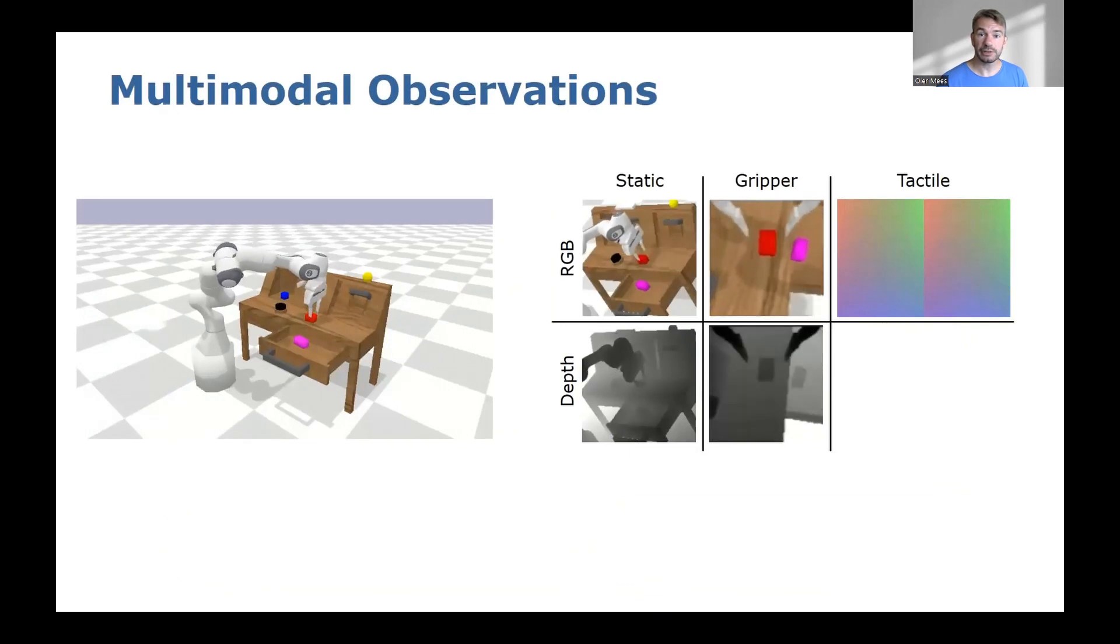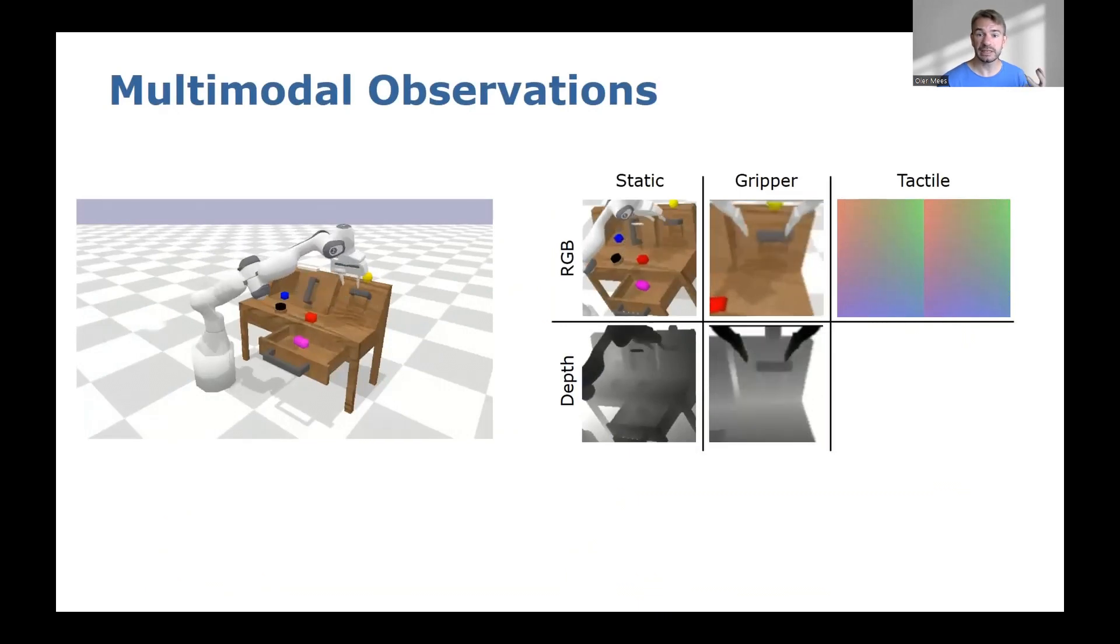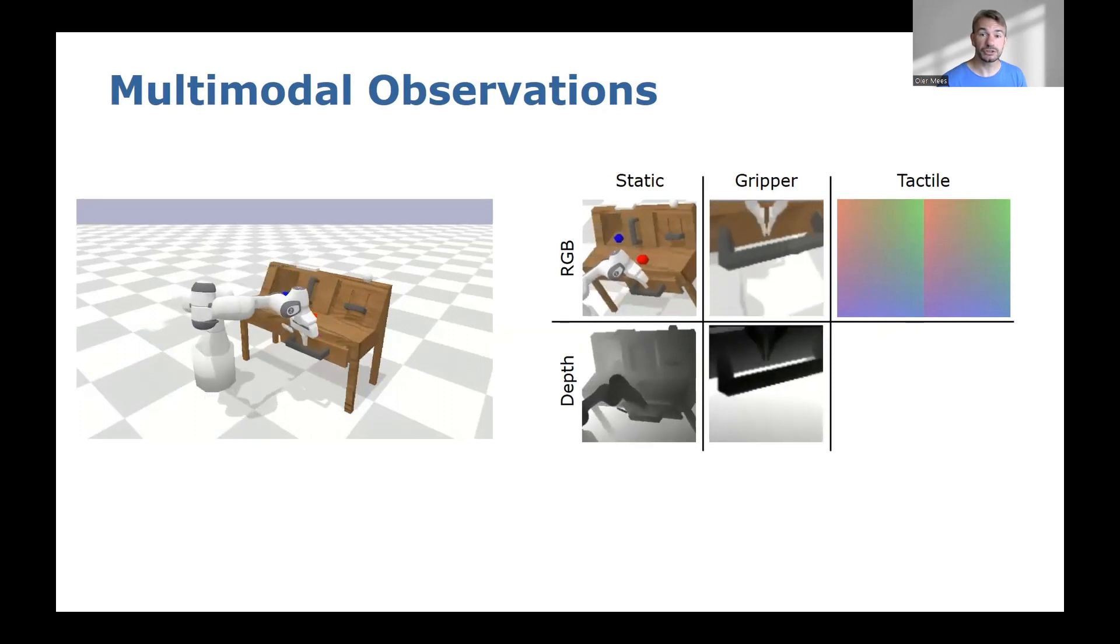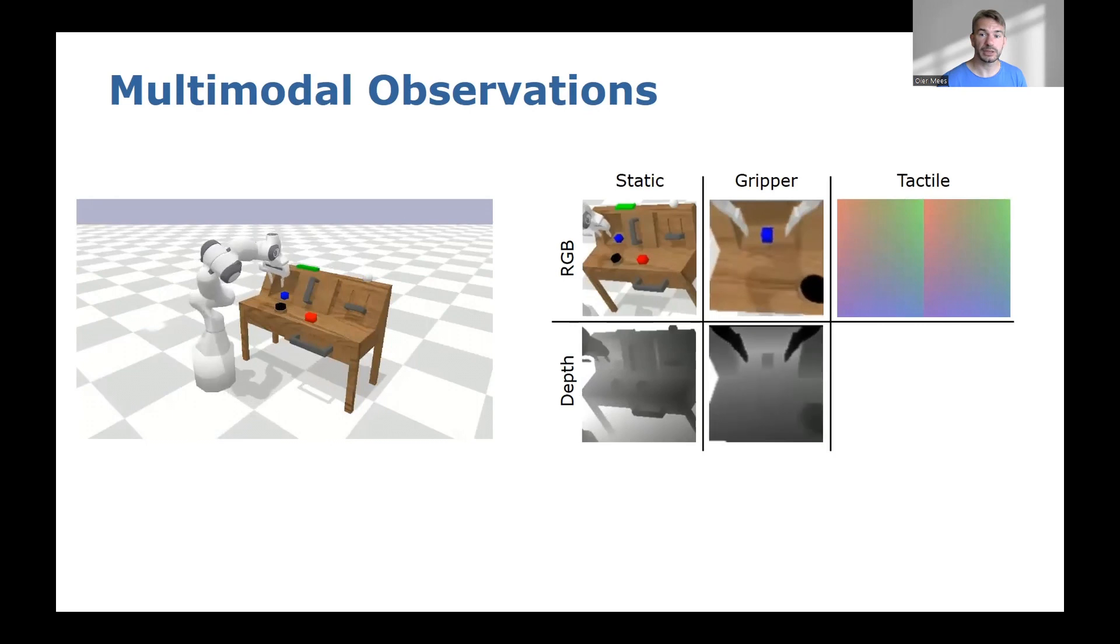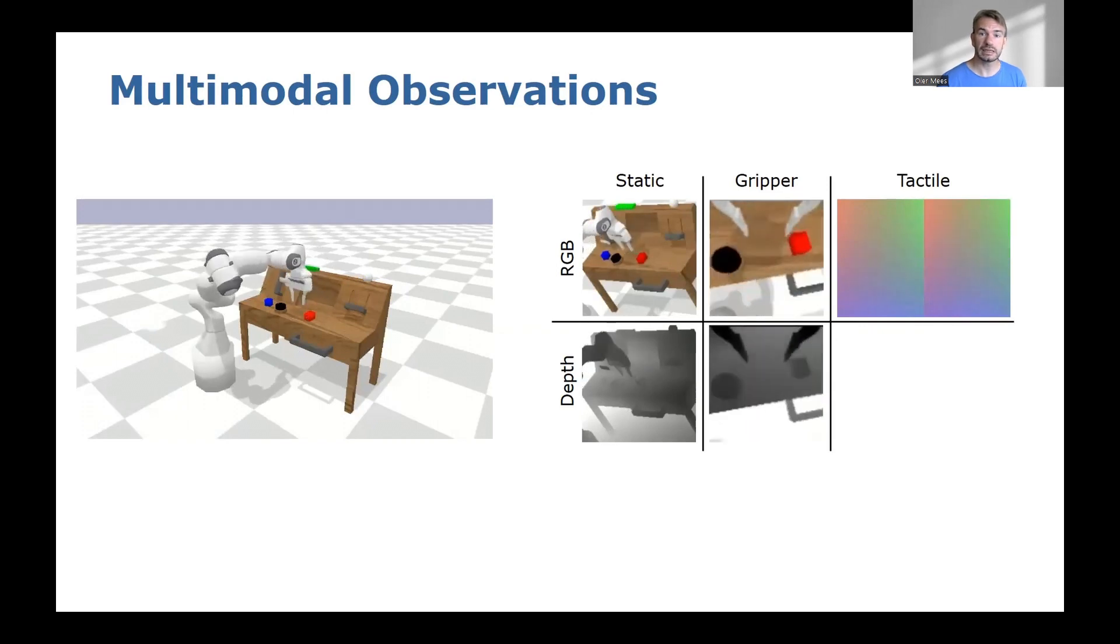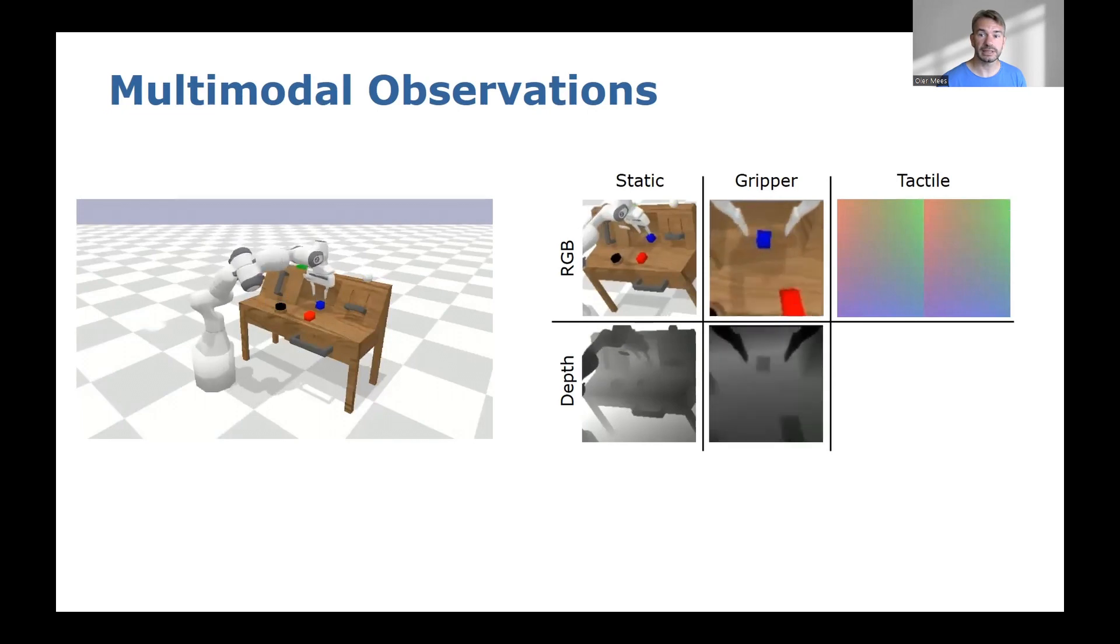CALVIN offers a wide range of sensors: RGB and depth images from both a fixed and a gripper camera, a vision-based tactile sensor, and continuous proprioceptive state information. We believe that this flexible sensor suite will allow researchers to develop improved multimodal agents that can solve many tasks in real-world settings.